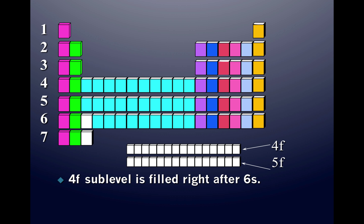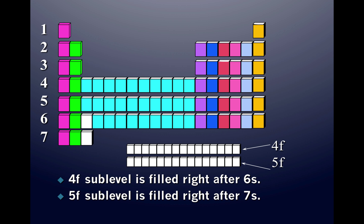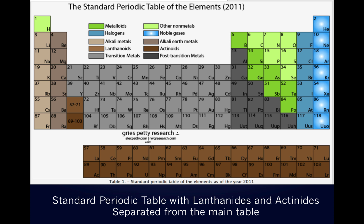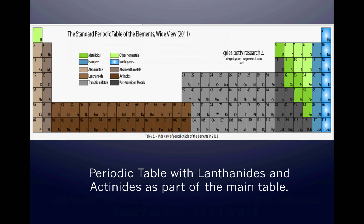The 4F sublevel is filled right after the 6s, which means 4F belongs in period 6 — in other words, lanthanum should be located in the 6th period. The 5F sublevel is filled right after 7s, meaning actinium should be located in the 7th period. This is shown on the standard periodic table with lanthanides and actinides separated, and we can also see what it would look like if they were located in the main table.